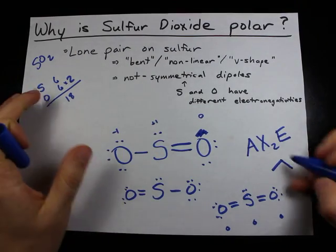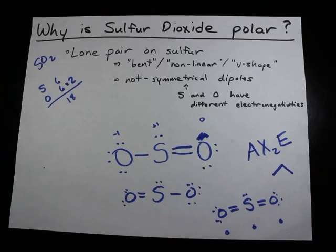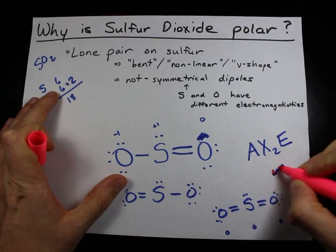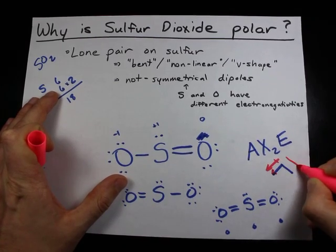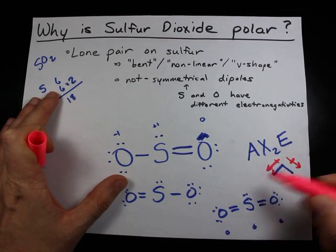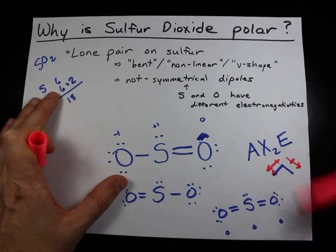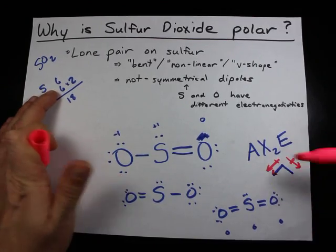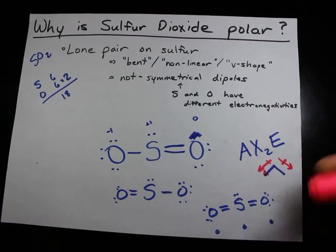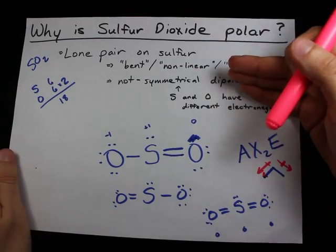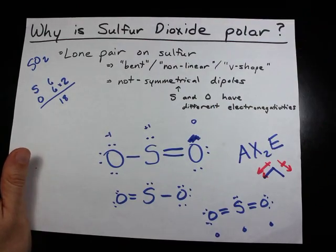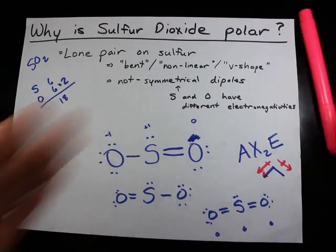Because the molecule is bent like this, and the sulfur and oxygens have different electronegativities, we have two bond dipoles that pull away from the sulfur and point towards the oxygen. These cancel each other out in a left-right direction, but they both point down, so they don't cancel out in an up-down direction. Therefore, because the bond dipoles do not cancel out, the molecule itself has a dipole, and it makes the molecule polar. Best of luck to you.